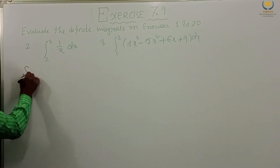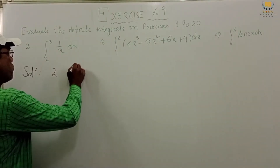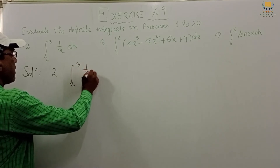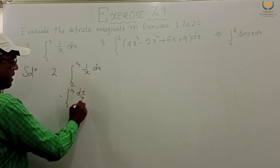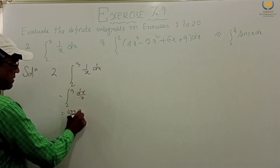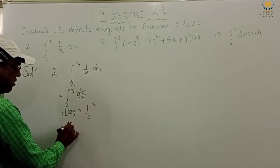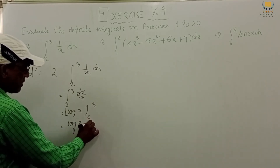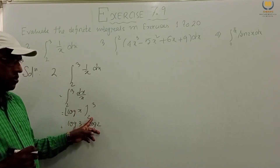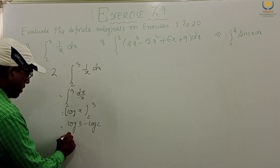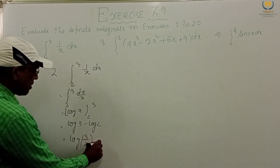Problem 2: integration from 2 to 3 of (1/x) dx, which is ∫₂³ dx/x. This equals log x evaluated from 2 to 3, giving log 3 minus log 2. Putting in the upper limit minus the lower limit, this becomes log(3/2). That is our answer.